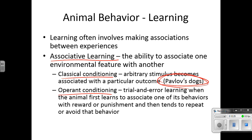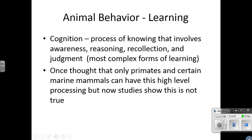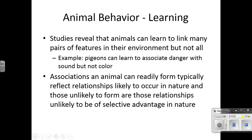Operant conditioning is trial-and-error learning where an animal first learns to associate one of its behaviors with a reward or punishment, and then tends to repeat or avoid that behavior. Studies reveal that animals can learn to link many pairs of features in their environment, but not all. For example, pigeons can learn to associate danger with sound but not color. Associations animals can readily form typically reflect relationships likely to occur in nature, and those unlikely to form are those unlikely to be of selective advantage in nature.